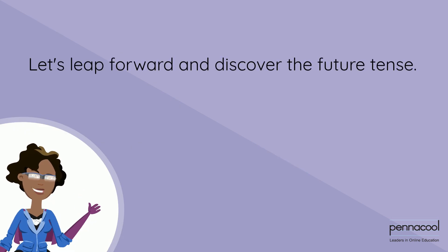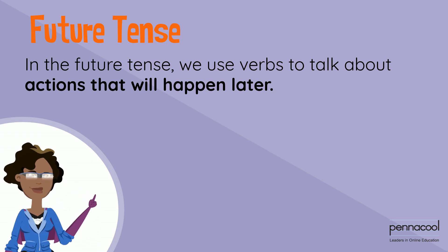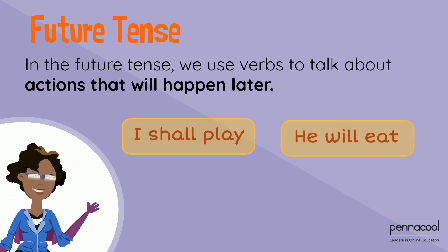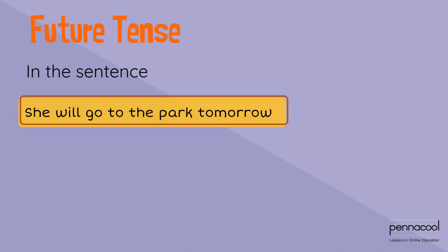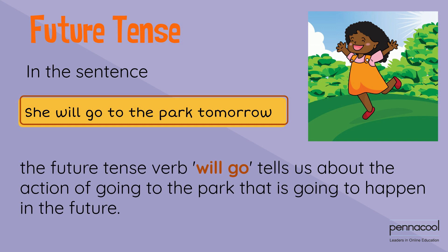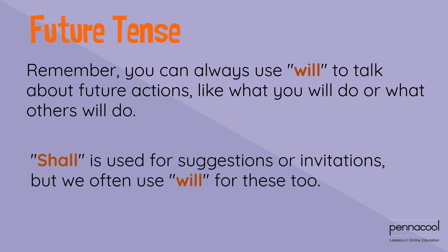Let's leap forward and discover the future tense. In the future tense, we use verbs to talk about actions that will happen later. For example: I shall play, he will eat, we will study. In the sentence 'she will go to the park tomorrow,' the future tense verb 'will go' tells us about the action of going to the park as it's going to happen in the future. Remember, you can always use 'will' to talk about future actions. 'Shall' is used for suggestions or invitations, but we often use 'will' for these too.